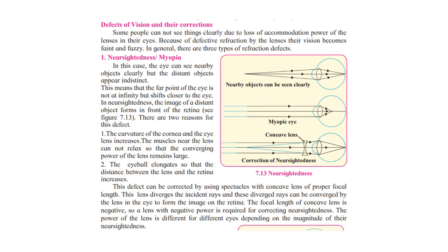Look at the diagram. The first diagram shows a normal eye — when the object is close, the image forms on the retina and you can see clearly. In the second diagram, when looking at an object from very far away, the image is formed somewhere in front of the retina and you cannot see properly.